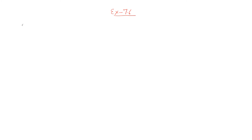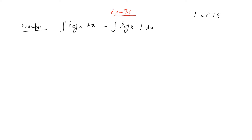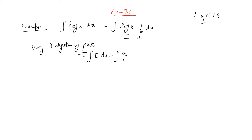First, I am taking the example of a very popular function: log x. If I need to integrate log x, there is just one function. So I can write log x as log x × 1. As per ILATE preference, the constant '1' is an algebraic function, so log x is given preference as the first function. Applying integration by parts: first function × integral of second, minus integral of (d/dx of first × integral of second) dx.